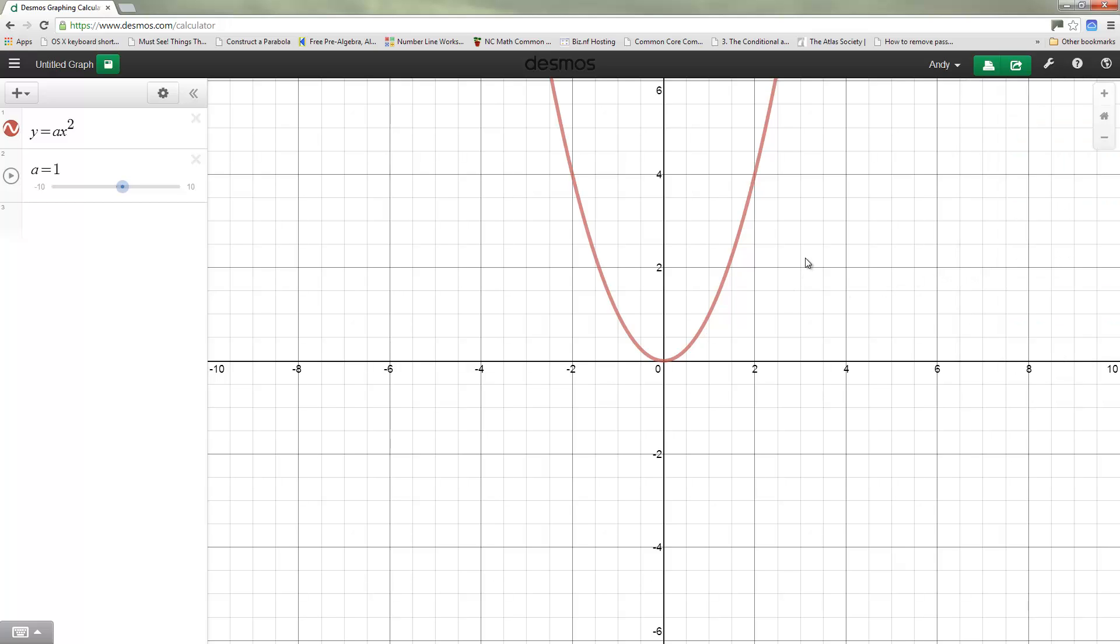What I wanted you to do was to see what's the effect of changing a and we can go ahead and play that slider. You can speed up the slider to get the effect a little bit faster. The key that we wanted to see here was that when a is positive the parabola opens up. When a is negative the parabola opens down and as you get farther away from zero the parabola becomes narrower, closer to zero and it becomes flatter or wider.